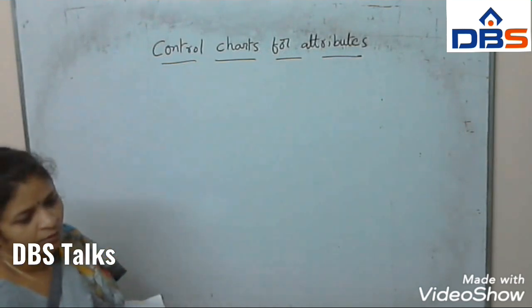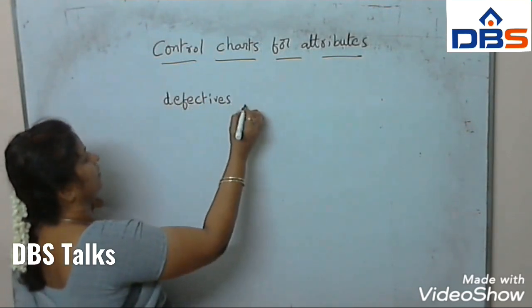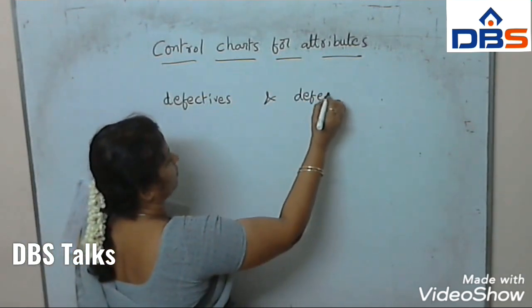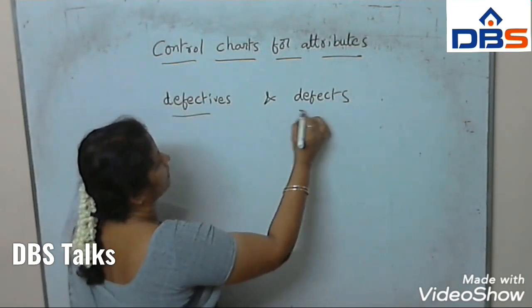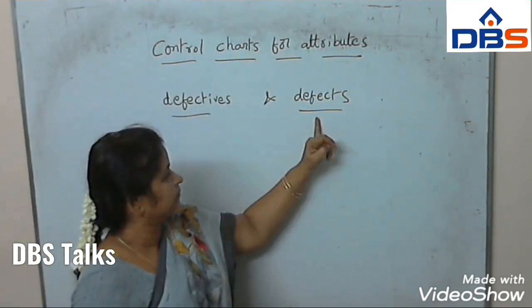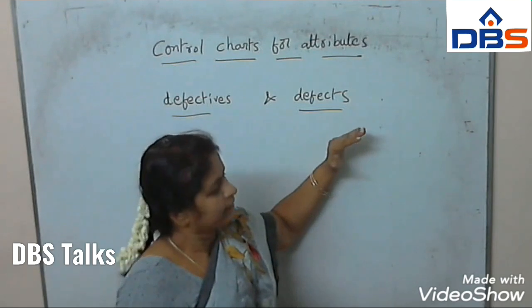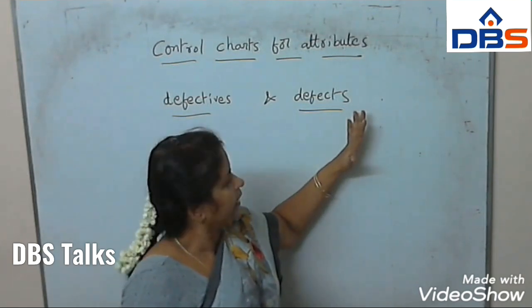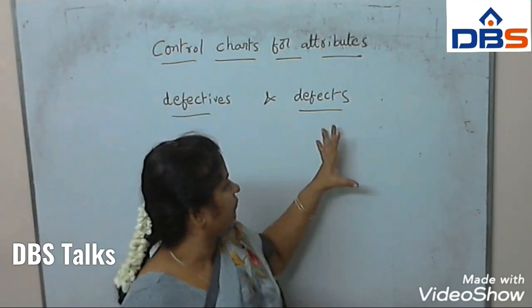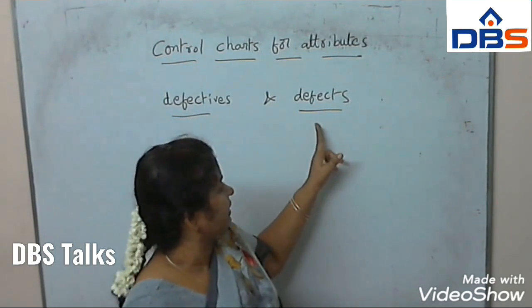There are two types of damages: defectives and defects. There is a small difference between defectives and defects. Defect means a manufactured article has to conform to many specifications. In every part of the article, it has to conform to some specification. If it fails even one specification, then we say that it has a defect.